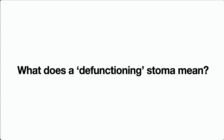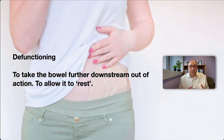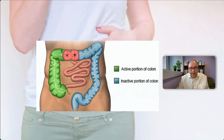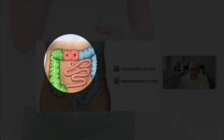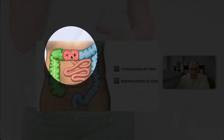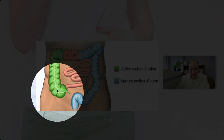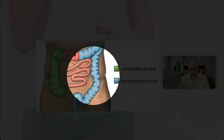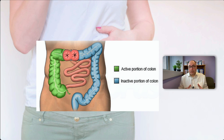Next up: what does defunctioning mean in the context of stomas? Defunctioning, essentially, means taking the bowel further downstream — further distal from a stoma — out of action for a period of time, usually as a temporary measure. The definition I really like is to allow the bowel to rest and recuperate from whatever you've done. An example is this loop stoma in the transverse colon: the green part is active and productive, with contents peristalsing into a bag, while anything distal to that — the blue section — is defunctioned and allowed to rest.